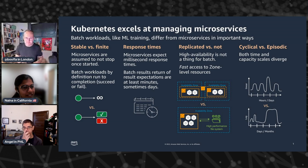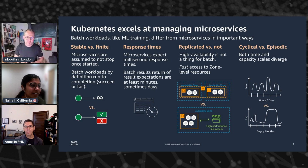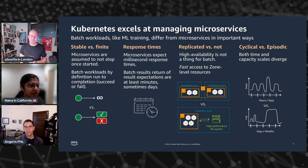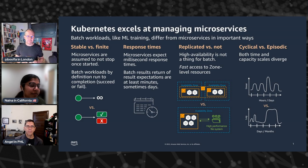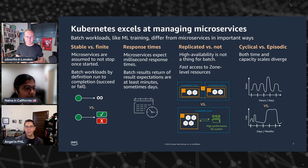Microservices are generally supposed to be highly available, so the application components are replicated in different availability zones. But when you think of batch workloads, you'd want to concentrate all your compute resources as well as data sources on the same availability zone — because you want fast access to the data and you can bin pack all your jobs onto the same instance to get better performance and cost optimization.